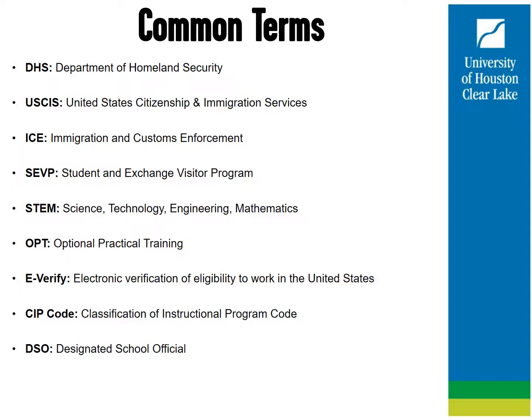STEM is the acronym for science, technology, engineering, and mathematics — the types of programs eligible for this extension of OPT. E-Verify is the number your employer needs to provide in order to qualify for the STEM OPT extension on the I-765 form. To be eligible for STEM benefits, your employer must participate in the E-Verify program. The CIP or SIP code can be found on your I-20 under the major/program information block; this code is a required field on the Form I-983. A link to the STEM SIP code list is provided at the end of this presentation.